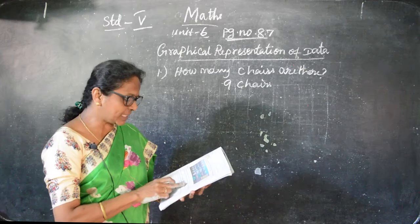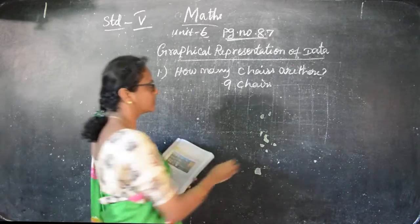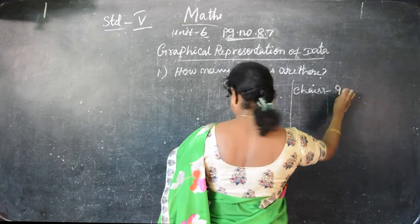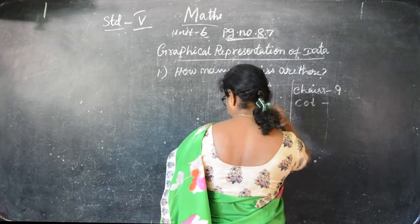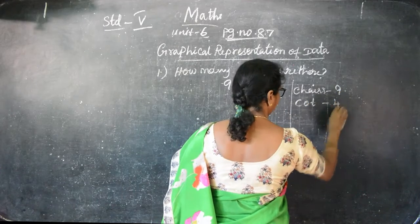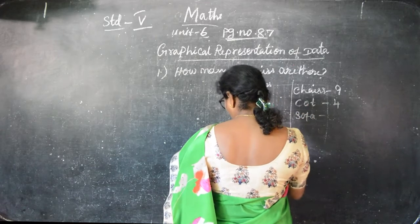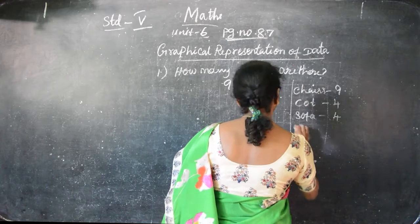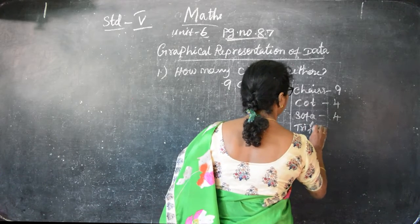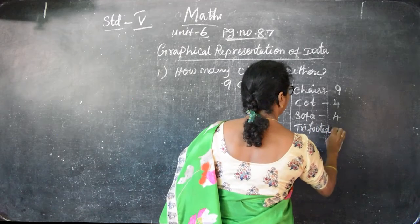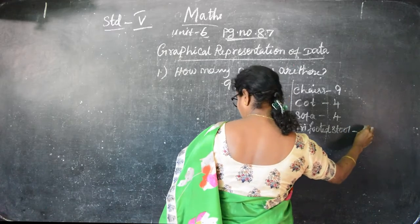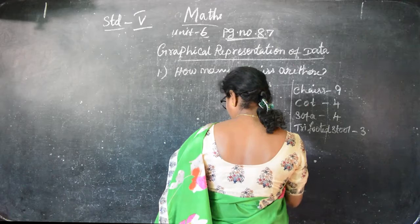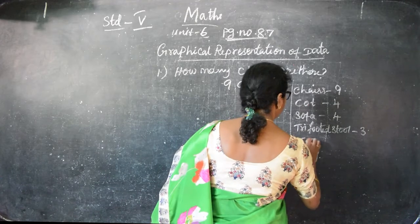They named articles that are lesser in count than the count of the courts. So you can write chairs - total number of chairs is 9. Then they are having the court - how many courts are there? 1, 2, 3, 4. Then sofa - 1, 2, 3. That is also 4. And then tri-footed stool - 3. Then table - 6. Table is 6. Then cupboard - that is 1.